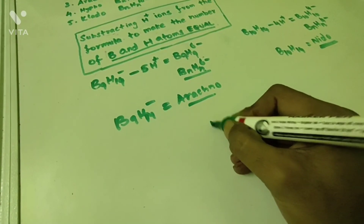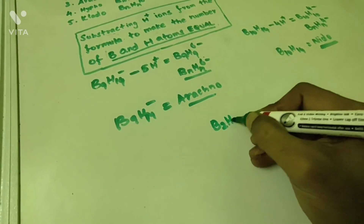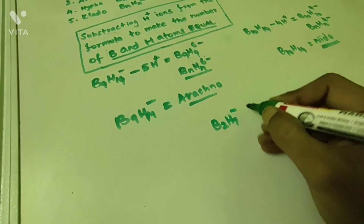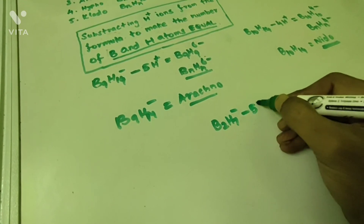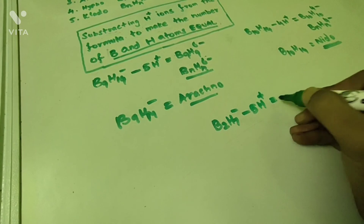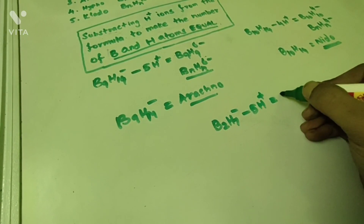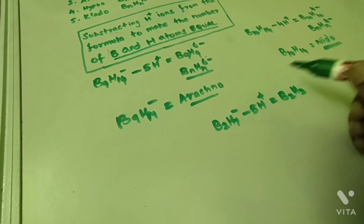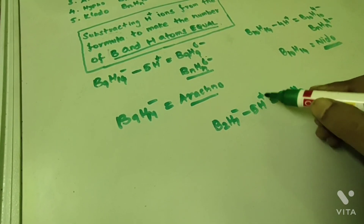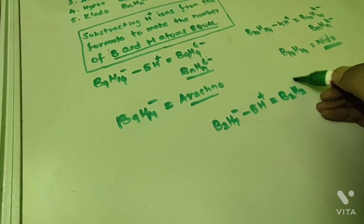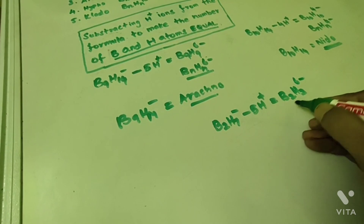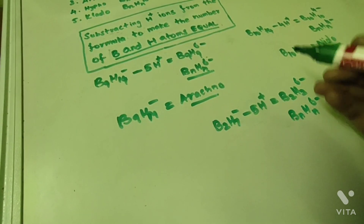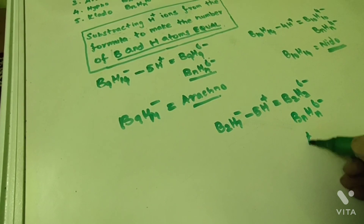Next example: B₂H₇⁻. There are 5 excess hydrogen atoms present. Therefore, I am subtracting 5 H⁺ ions to make the number of boron and hydrogen atoms equal, giving B₂H₂. The formal charge is already 1 minus, and 5 H⁺ ions are removed, so total charge is 6 minus. This formula is represented as BnHn⁶⁻. Therefore, B₂H₇⁻ is an Arachno compound.